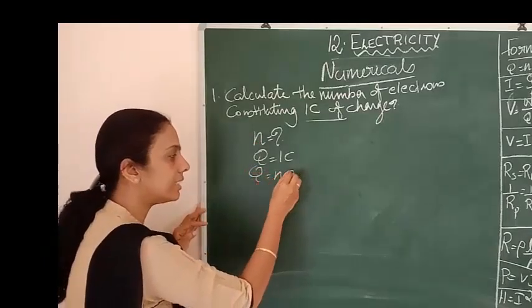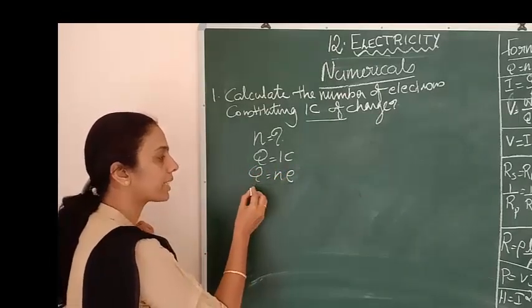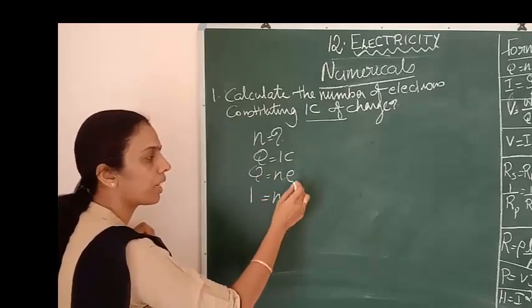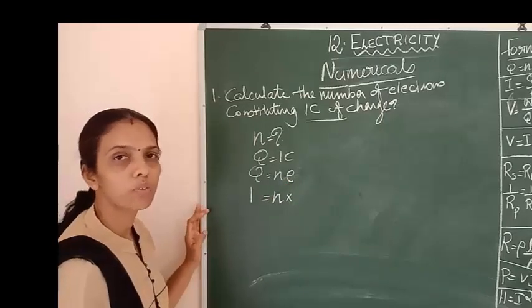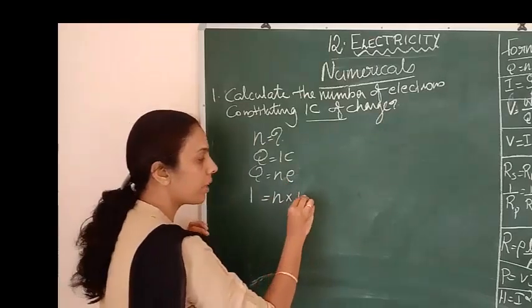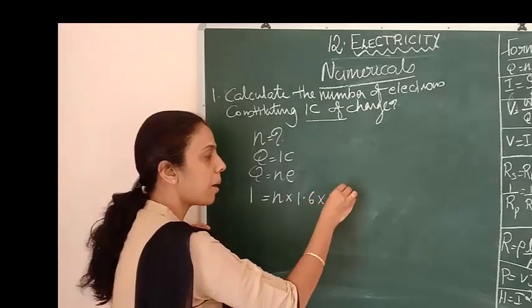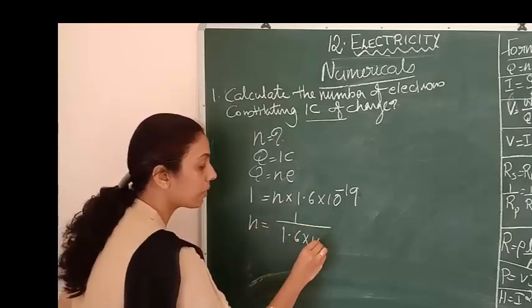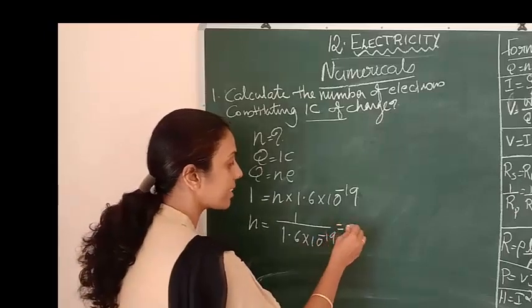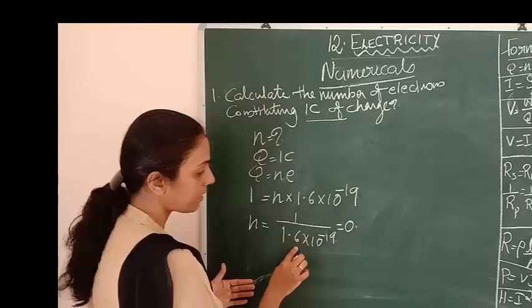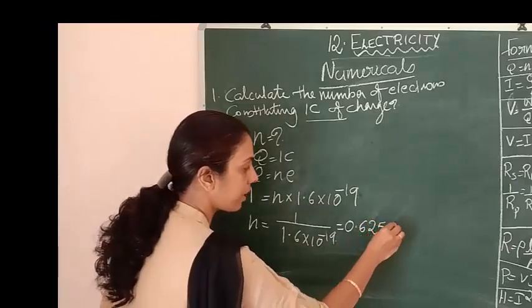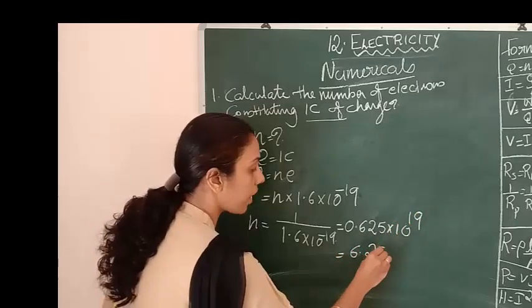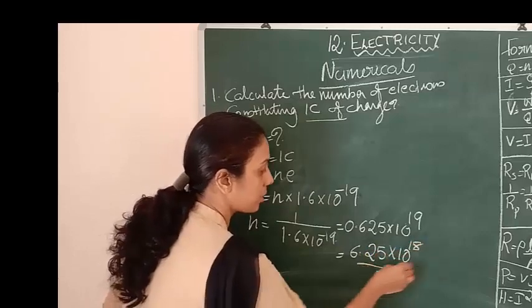Q equals N times E. Substituting: 1 equals N times E. The charge of an electron E is 1.6 × 10^-19 coulombs. So N equals 1 divided by 1.6 × 10^-19, which gives 0.625 × 10^19, that is 6.25 × 10^18 electrons.